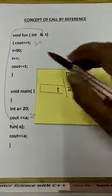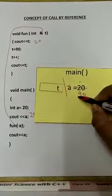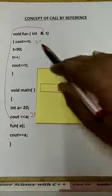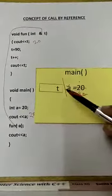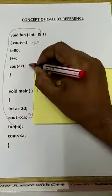t plus plus, increment of one value, so instead of 90 it will become 91. cout t. Now the new value of t is 91, so 91 will be printed.